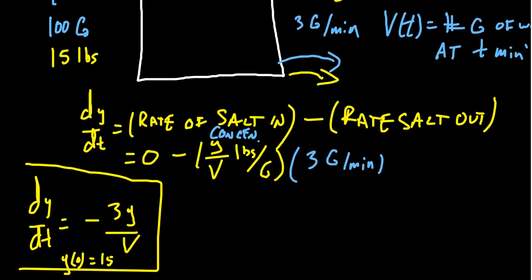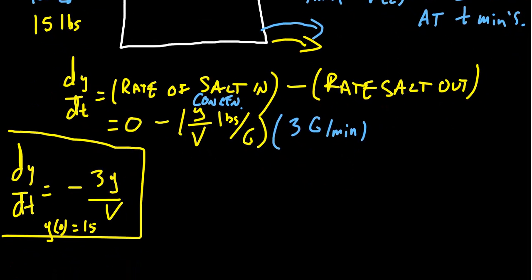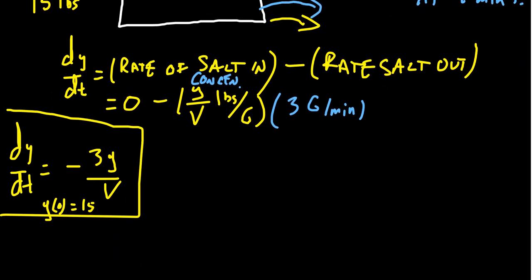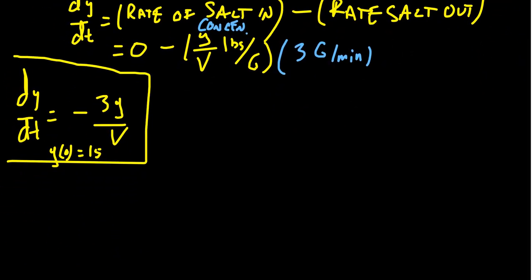We have to solve this differential equation. We'll start with a simpler one — let's look at volume for a moment. We can write dV/dt in terms of the rate at which water comes in minus the rate at which water exits.